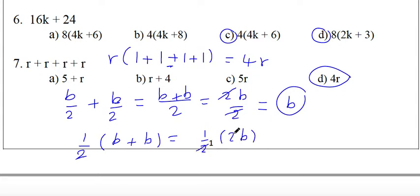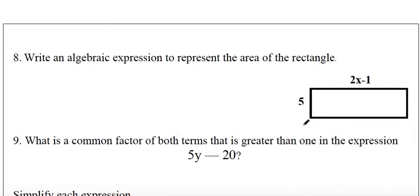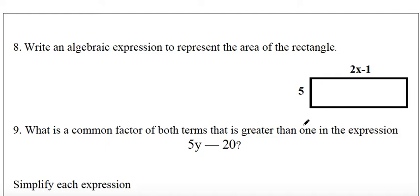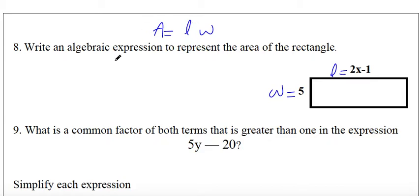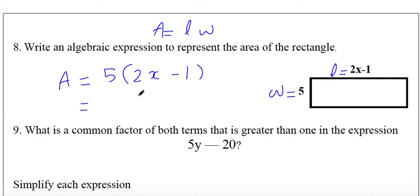Question nine: write an algebraic expression to represent the area of a rectangle. Area equals length times width. The length is 2x minus 1 and the width is 5, so area equals 5 times (2x minus 1). Using distributive property: 5 times 2x equals 10x and 5 times 1 equals 5, giving 10x minus 5. Both forms are correct answers.